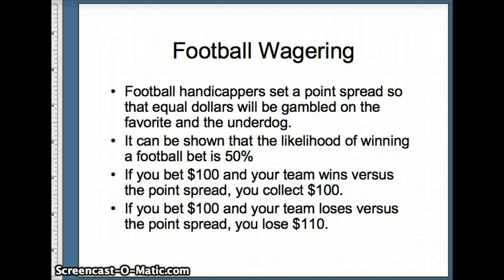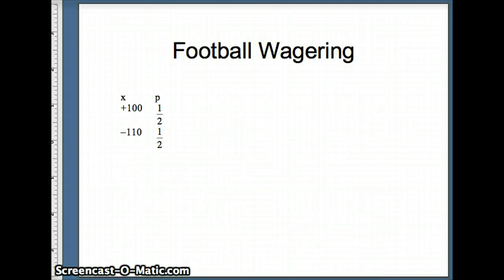Here's another game of chance, Football Wagering. Football handicappers set a point spread. Basically, it can be shown that the likelihood of winning that gambling bet is going to be about 50%. If you bet $100 and you win, you're going to collect $100. If you bet $100 and you lose, you're going to lose 110. That's called juice or vigorish. The probability of winning is 0.5. The probability of losing is 0.5.